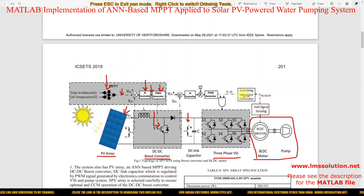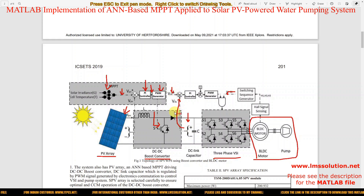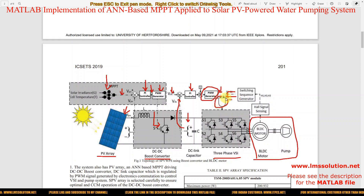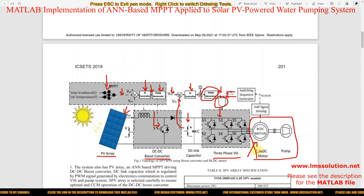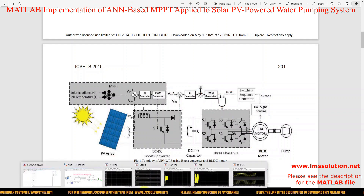The hall sensor output is converted into switching pulses for S1 to S6 of the voltage source inverter. The DC link voltage is measured and compared with a reference DC voltage, processed by a PI controller, and then by a PWM generator to generate pulses. These pulses and the pulses from the switching sequence generator are ANDed together, and the final pulse is given to the switches in the voltage source inverter to control the BLDC motor. This is the operation of ANN MPPT applied to the solar PV powered water pumping application, which will be implemented in MATLAB Simulink.